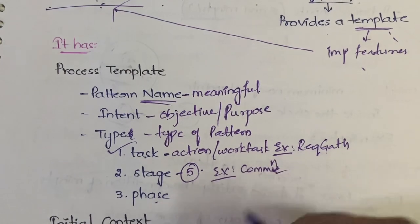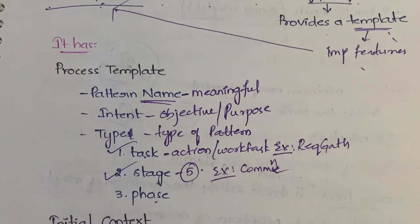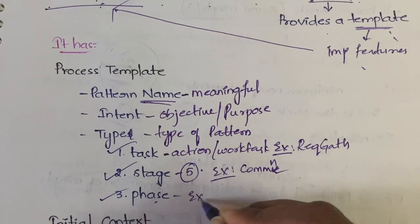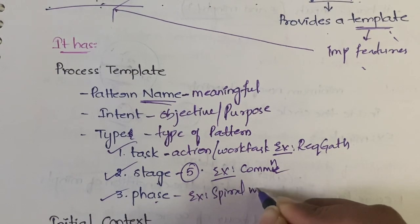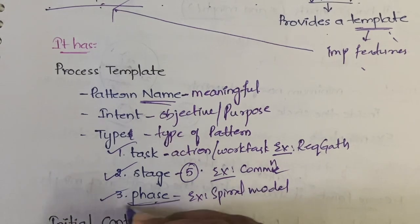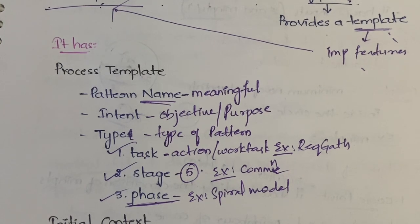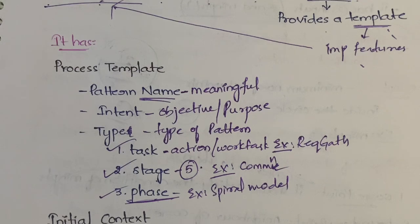Phase defines the sequence of the framework activities — that is, which model you are using. For example, we are using the spiral model. It defines how the framework activities are happening, in which order. The stage defines which stage of the framework activities you are in, while the phase defines the sequence. So this is about the process template.